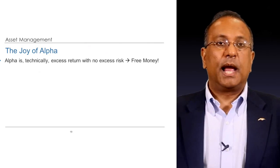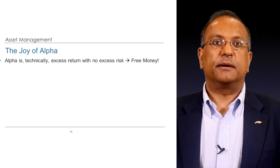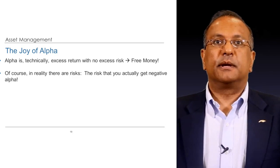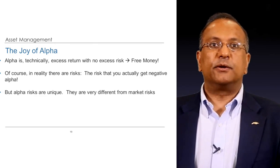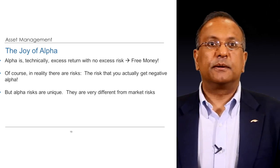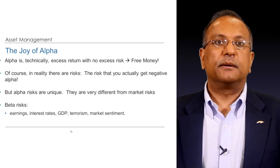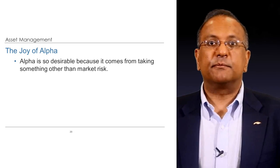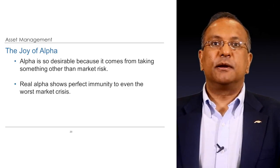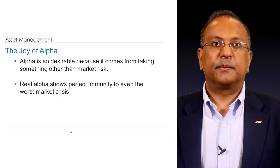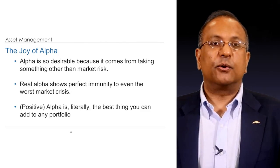Alpha is wonderful. Alpha is technically excess return with no excess risk — literally free money. Of course in reality there are risks, and the risk is that you actually got negative alpha. But alpha risks are unique and very different from market risk. Beta risks are things like earnings, GDP, and macroeconomic factors. Alpha is so desirable because it comes from taking something different from market risk. Real alpha shows perfect immunity from even the worst market crises, and alpha is literally the single best thing you can add to any portfolio because it has zero correlation to anything.